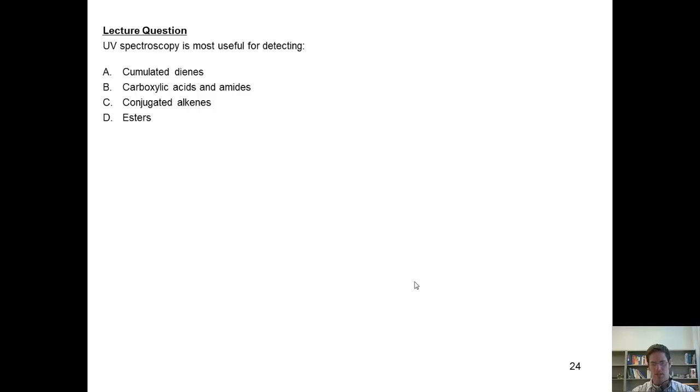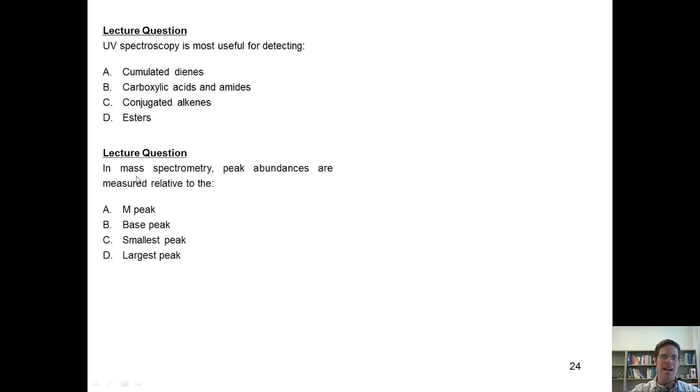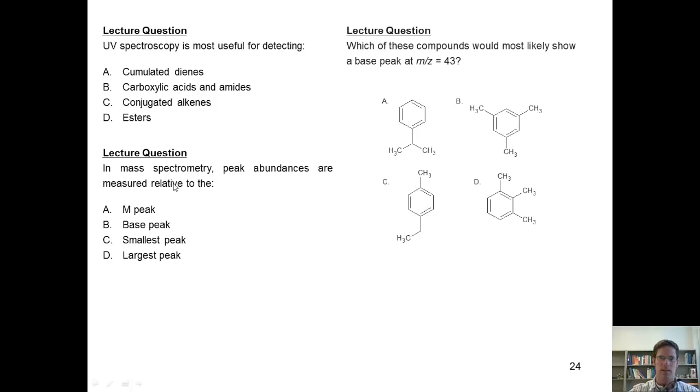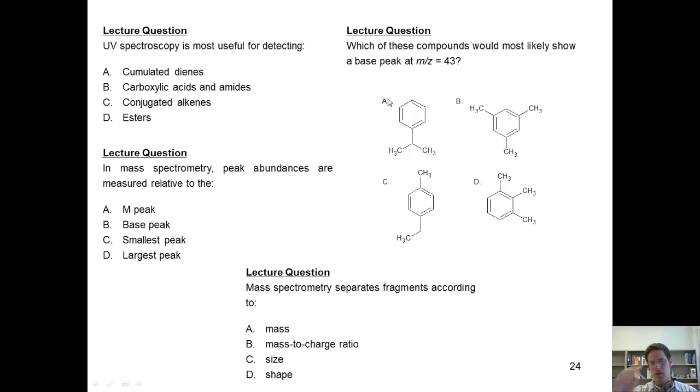And now we arrive at standardized exam type questions. This will be easy. UV spectroscopy is most useful for detecting what? Next question, in mass spectrometry, peak abundances are measured relative to what? And this question, which of these compounds would most likely show a base peak at mass over charge equals 43? And last question, mass spectrometry separates fragments according to what?